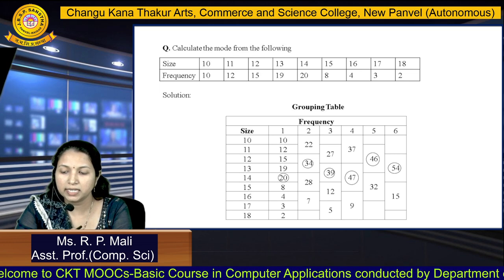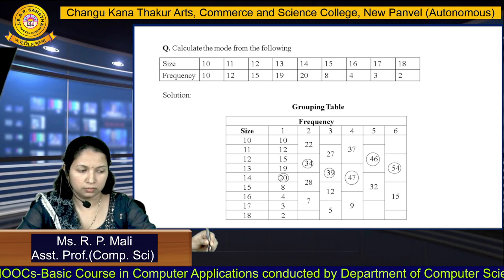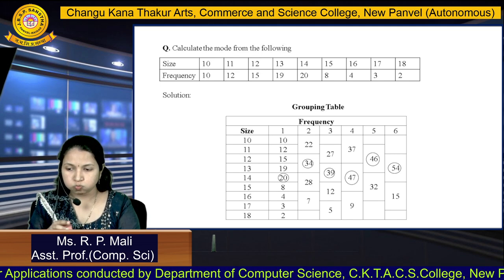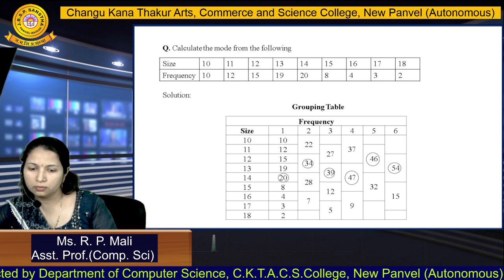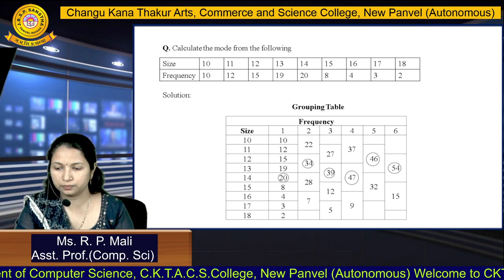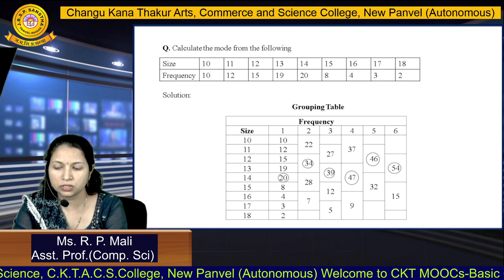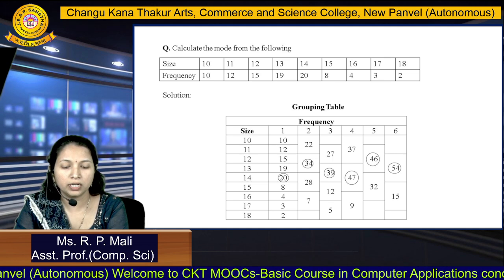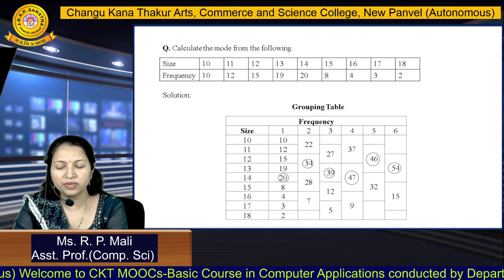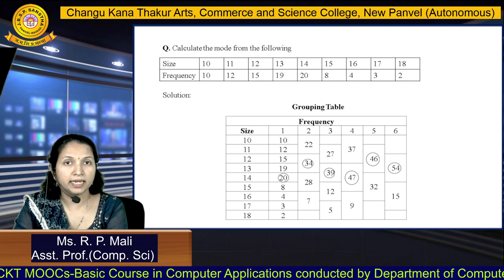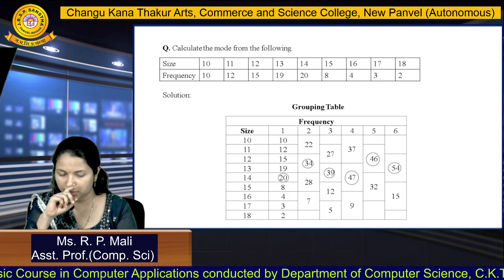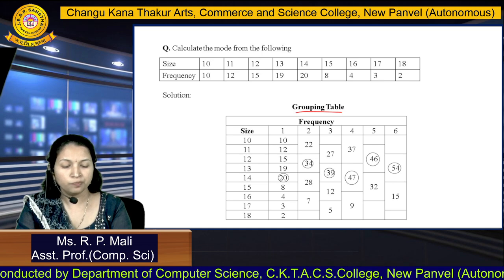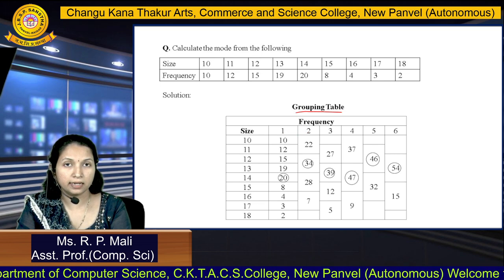Here is the example for the discrete series. We have two columns: size and frequency. The sizes are 10, 11, 12, 13, 14, 15, 16, 17, 18, and the corresponding frequencies are 10, 12, 15, 19, 20, 8, 4, 3, and 2. We are going to draw the grouping table with 6 columns and write the sizes in the margin.